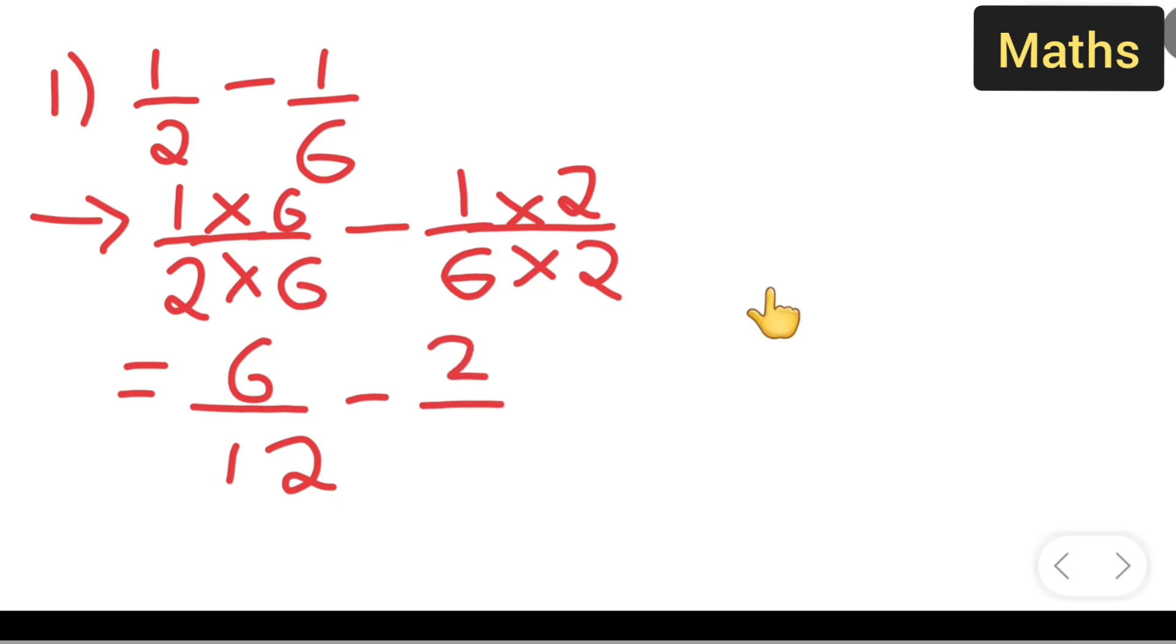2 upon 12 is equal to 6 minus 2 upon 12, which is equal to 6 minus 2 will give you 4. 4 upon 12, so 4 ones are 4, 3s are 12. What is the answer? 1 upon 3 is the answer.